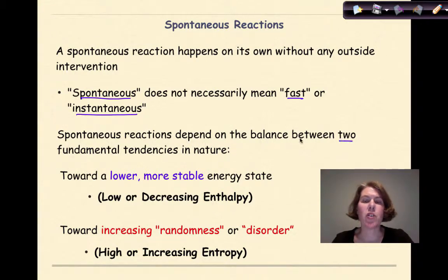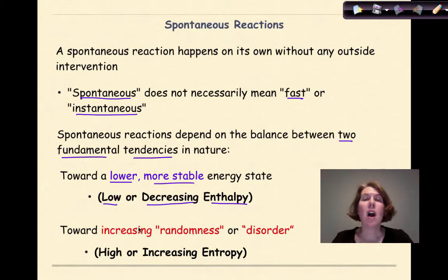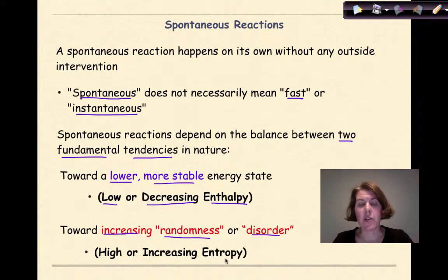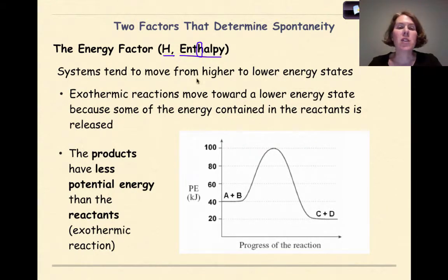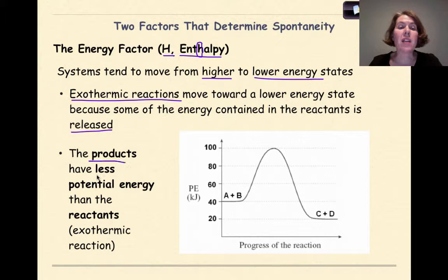Spontaneous reactions depend on the balance between two fundamental tendencies in nature. The first is towards a lower, more stable energy state — in other words, low or decreasing enthalpy. The other tendency is towards increasing randomness or disorder, which we call entropy. The first factor is the energy factor, or H, otherwise known as enthalpy. You can differentiate between entropy and enthalpy because enthalpy has an H in it for heat. Systems tend to move from higher to lower energy states. Exothermic reactions move towards a lower energy state because some energy contained in the reactants is released — the products have less potential energy than the reactants.